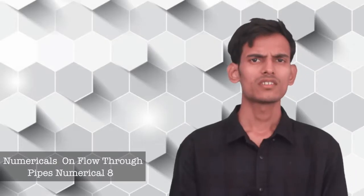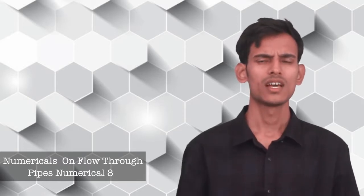We've already seen the theory part of flow through pipes, different types of losses, major losses, and minor losses. Now let's do a few numericals and try to understand how the formulas are applied. We'll calculate the losses of head in different cases, both minor losses and major losses.